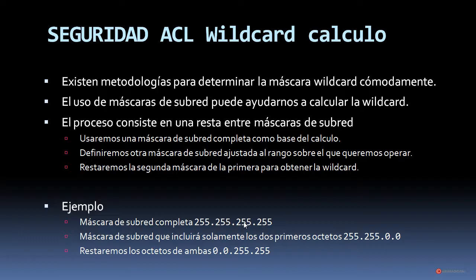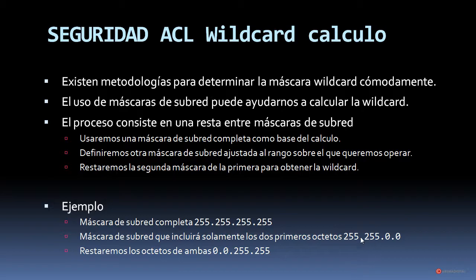Aquí tenemos un ejemplo. La máscara de subred completa es 255.255.255.255. La máscara de subred que incluirá solamente los dos primeros octetos sería 255.255.0.0. Si queremos filtrar ese rango de direcciones que incluya los dos primeros octetos, como por ejemplo la 192.168, y luego todas las direcciones IP que incluyen ese rango, restaremos los octetos: a 255 menos 255 nos queda 0, y a 255 menos 0 nos queda 255.